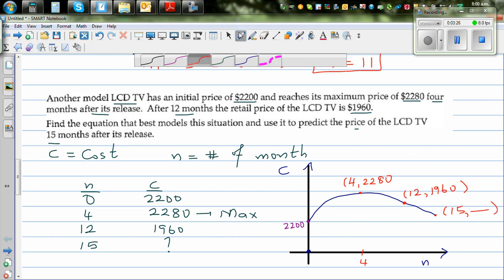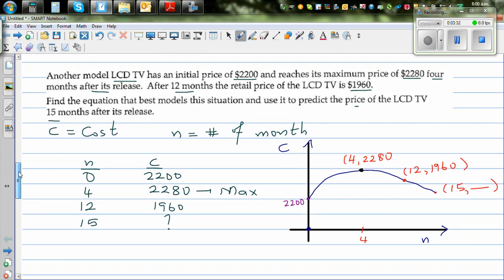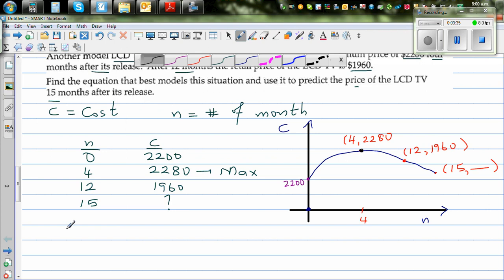Now just looking at the vertex or the turning point, you can see the parabola has moved. So the equation is C equals A times—it has gone 4 to the right—so it should be (N minus 4) squared. And it has gone 2280 up. So this is plus 2280.